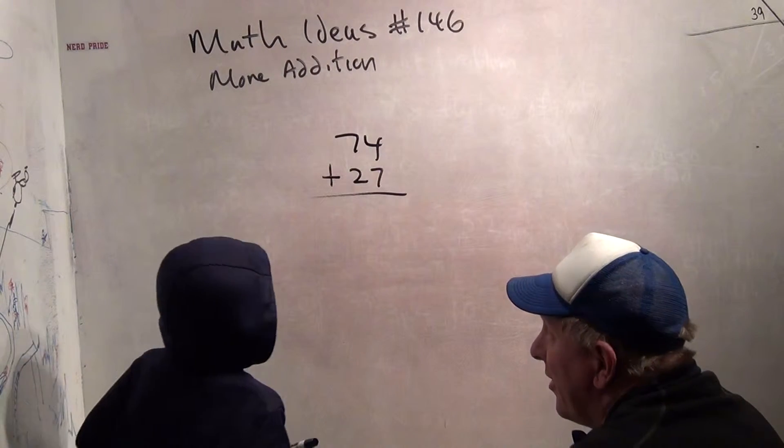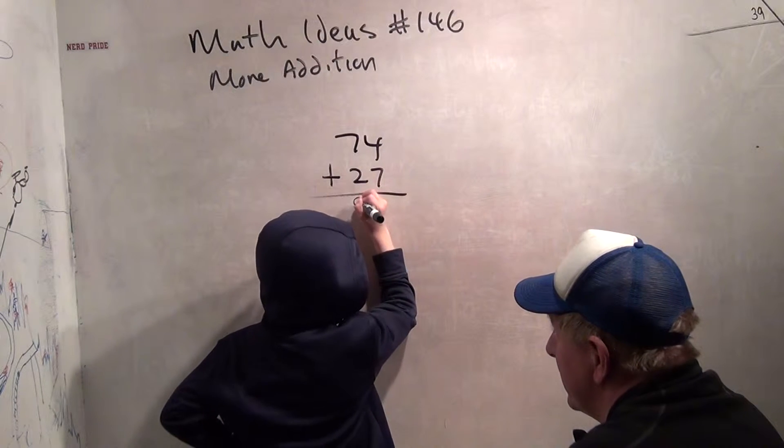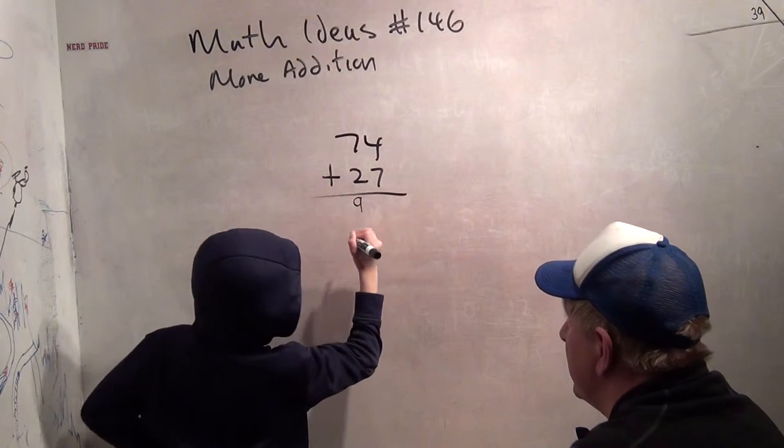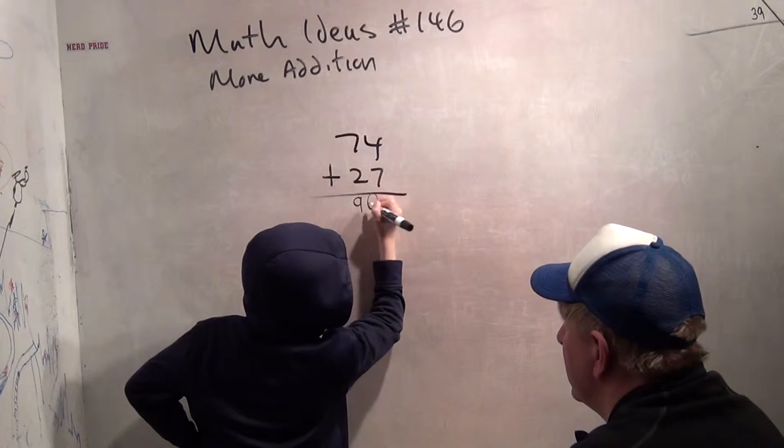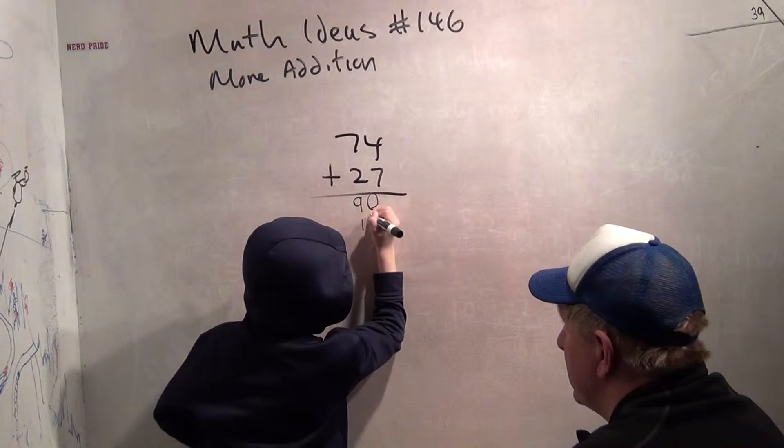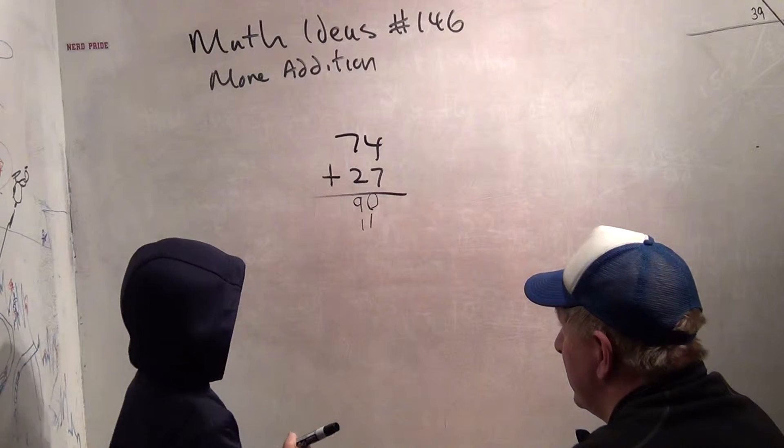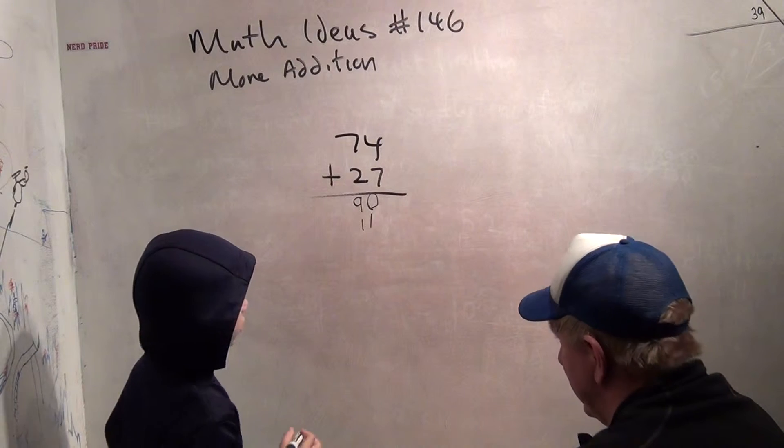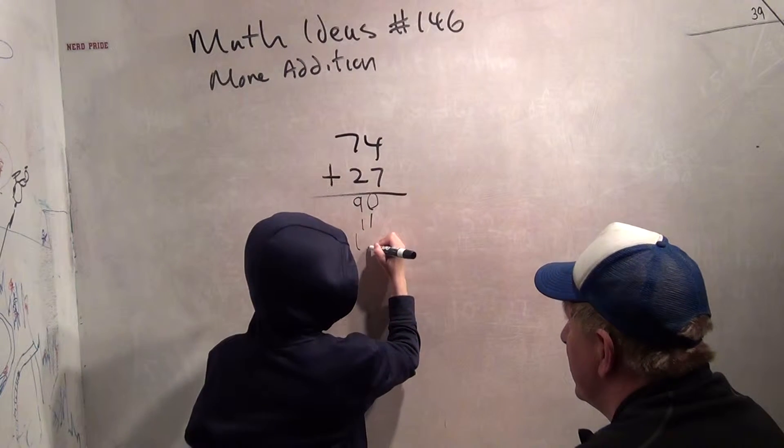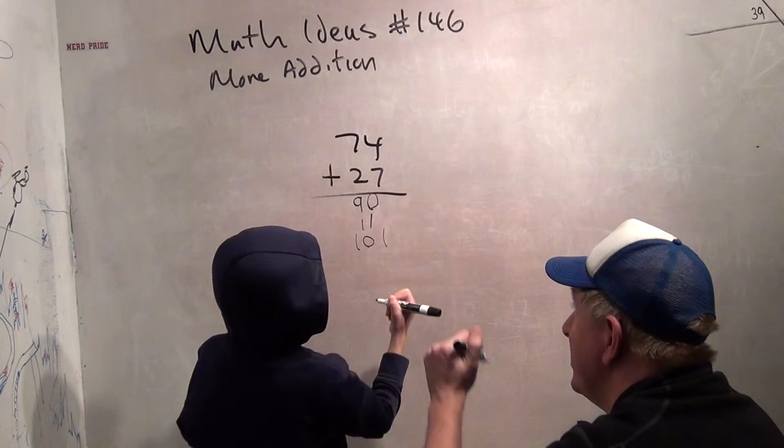70 plus 20 is 90 and 4 plus 7 is 11. So that is 101. Can I write that down? Good job!